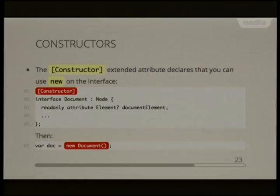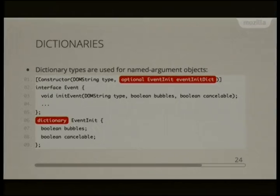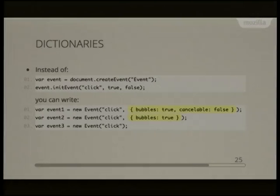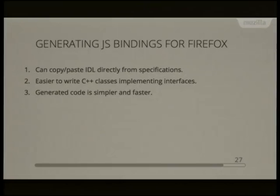Another option in Web IDL is defining interfaces as constructible by using the [Constructor] extended attribute, allowing new Document() — since being able to use 'new' is very common in JavaScript. There are also dictionaries to allow named arguments to be passed into methods, making APIs more readable. For example, DOM event initialisation methods can have five booleans in a row and you don't know what they are, so dictionaries make those APIs more understandable.